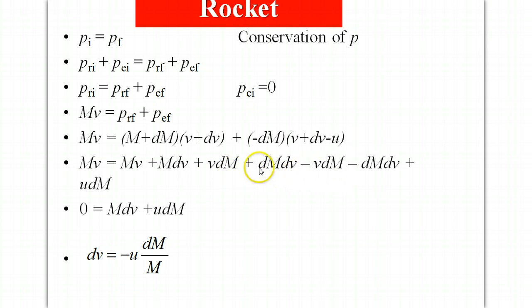Now this term right here, these are two infinitesimals multiplied together, dM and dv are very small and so we're going to think of dM times dv as being a negligible quantity. That simplifies our equation to something that looks like this which we when we do a little bit of algebra ends up with an equation that looks like this.